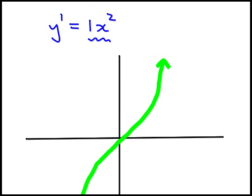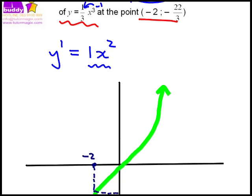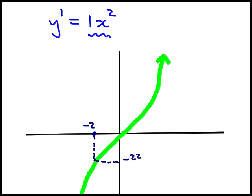Then we have a point minus 2. Let's say it's there. Which will intersect there and it will have a y value of minus 22 over 3. And that identifies that point on the actual curve of this equation or on the actual graph.